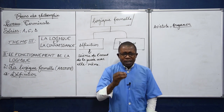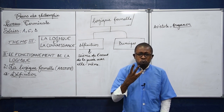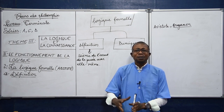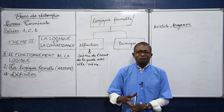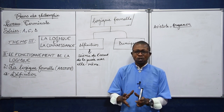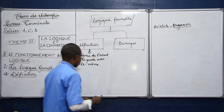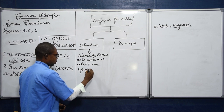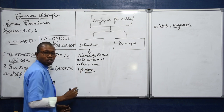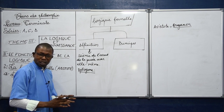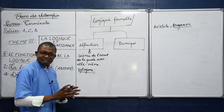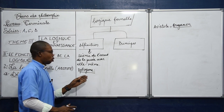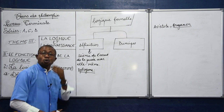La logique formelle, dans son déploiement, examine le raisonnement déductif, et le modèle ici est le syllogisme. La logique formelle s'appuie sur un type de raisonnement déductif que l'on appelle le syllogisme. Alors, c'est quoi le syllogisme ?